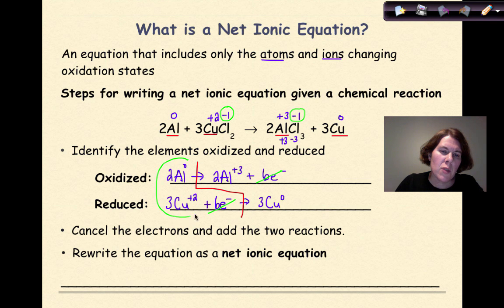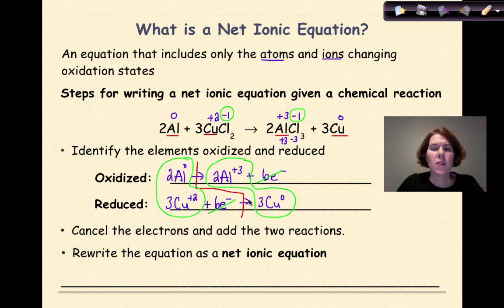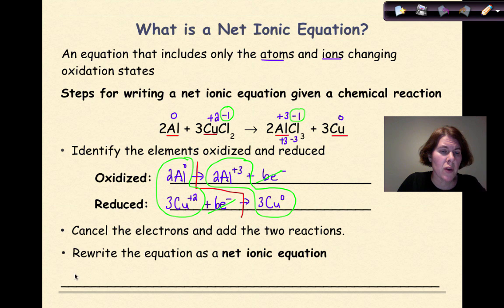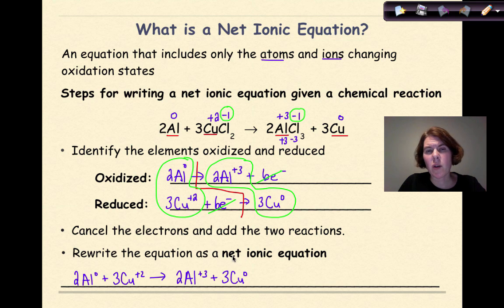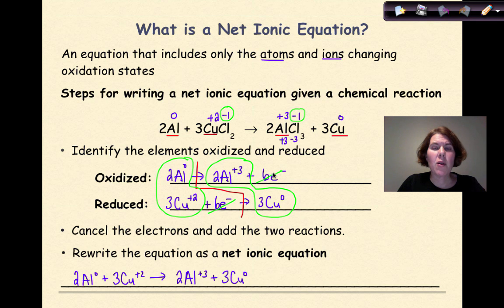I'm left with two species on the reactant side and two species on the product side — those are the things involved in my net ionic equation. When I rewrite this, that's all I'm going to include: 2Al⁰ + 3Cu⁺² yields 2Al⁺³ + 3Cu⁰. And that is my net ionic equation — just showing what's being oxidized and what's being reduced. So starting from the top: we had a general chemical reaction, assigned oxidation numbers, identified what was being oxidized and reduced, added in our stair step, canceled our electrons, and finally wrote our full net ionic equation.